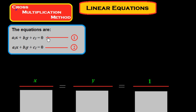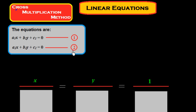Here I have written some general form of equations. Equation 1 is a1x plus b1y plus c1 is equal to 0, and equation 2 is a2x plus b2y plus c2 is equal to 0. So we will see how we solve this through the cross multiplication method.